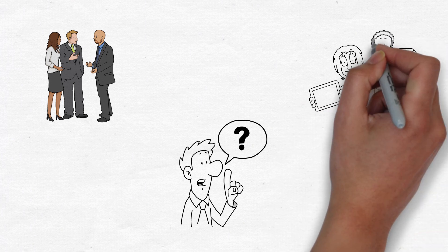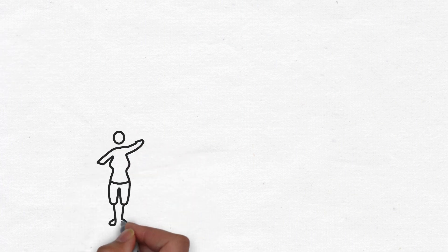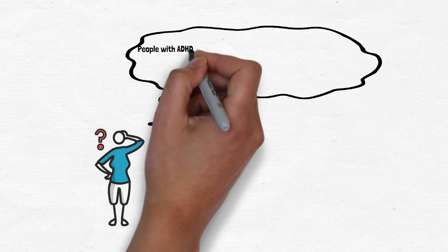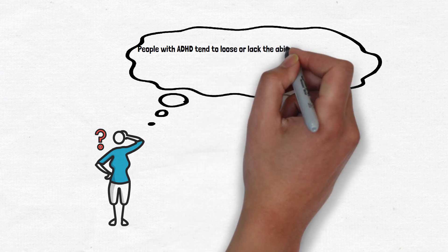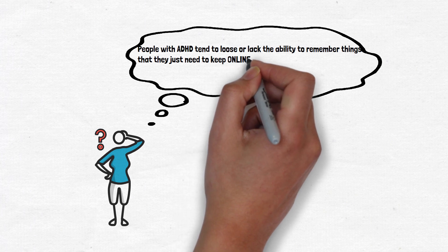People without ADHD might have to put some effort into it, it might feel like a bit of a struggle, but typically they would be able to recite that phone number in their mind over and over and then put it into their phone. People with ADHD tend to lose the ability or lack the ability to remember things that they just need to keep online for anywhere from 10 seconds to a minute or two.